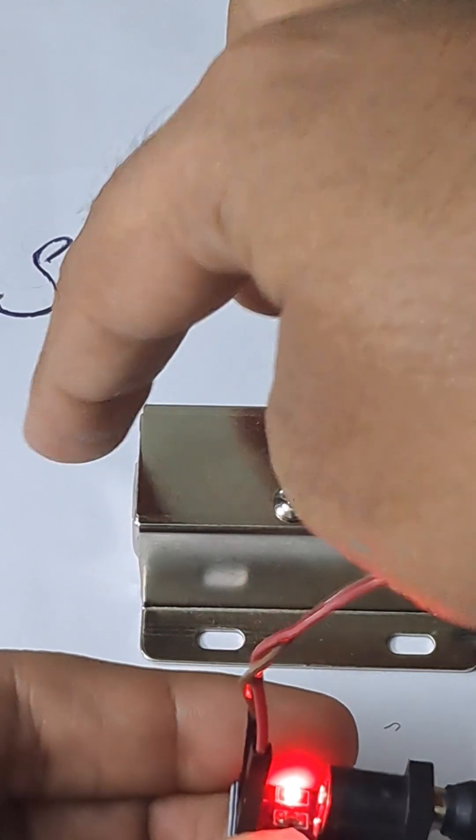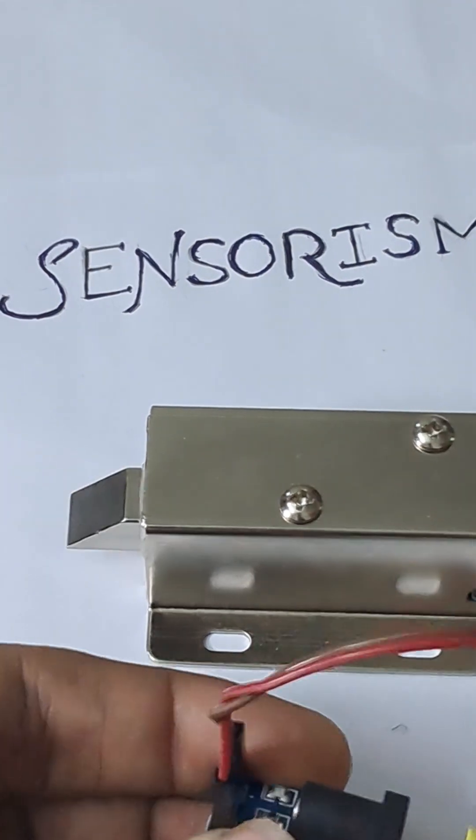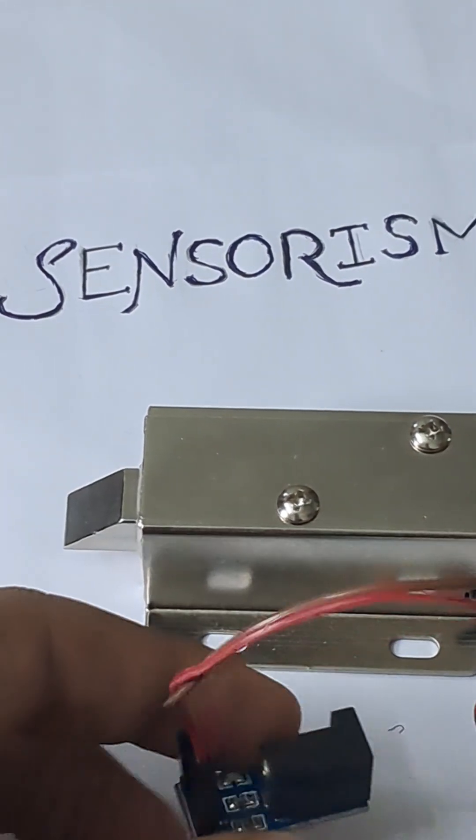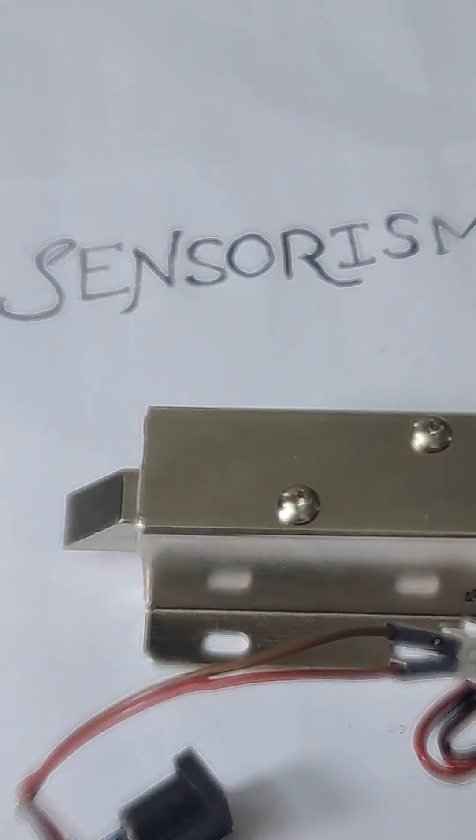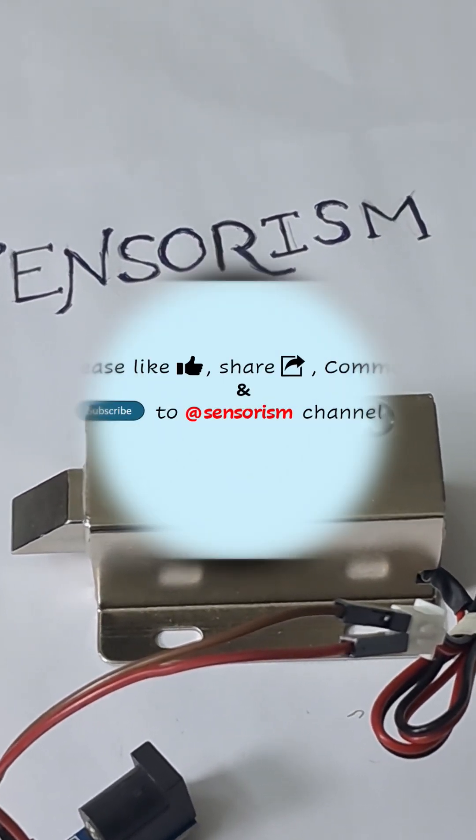As you can see, when the power is on, the valve goes inside. When it is off, it comes out. That's how we can control the cabinet locking and unlocking. Thank you.